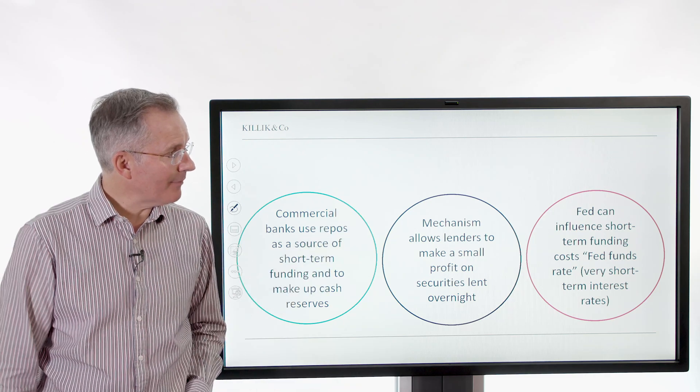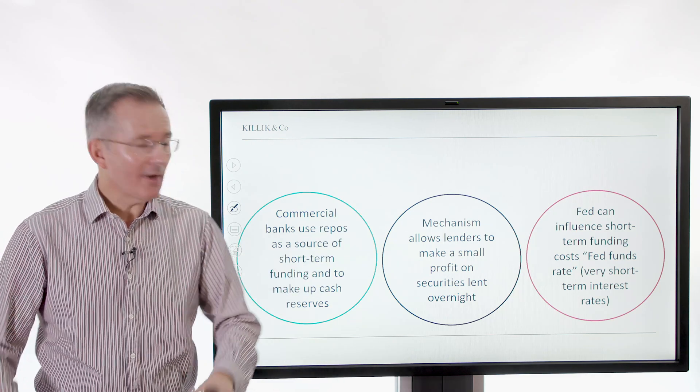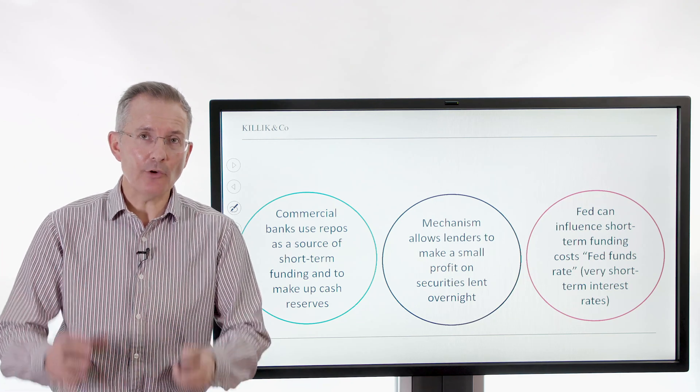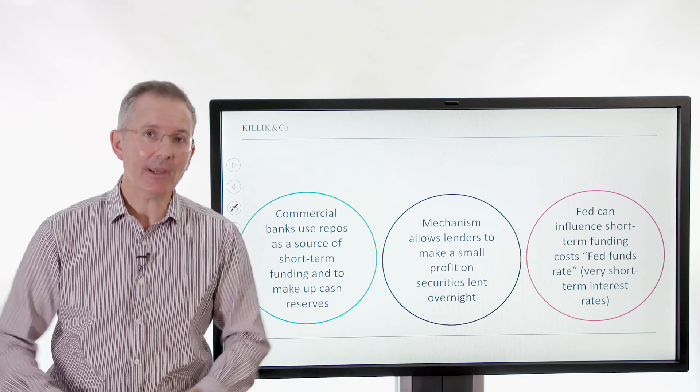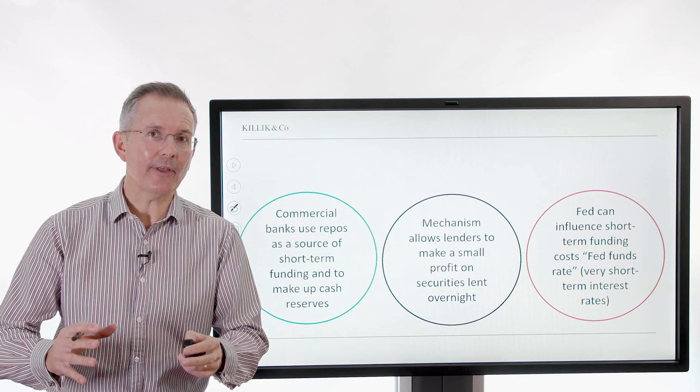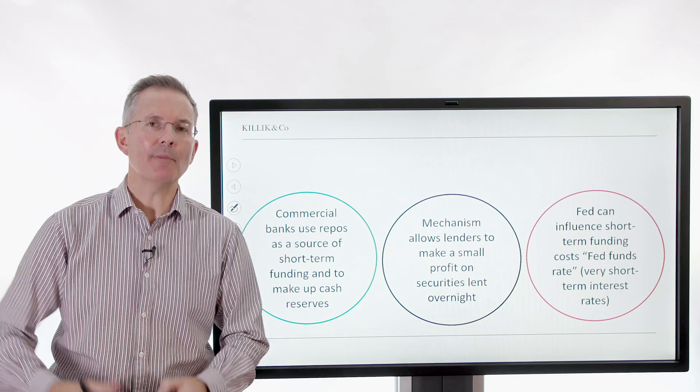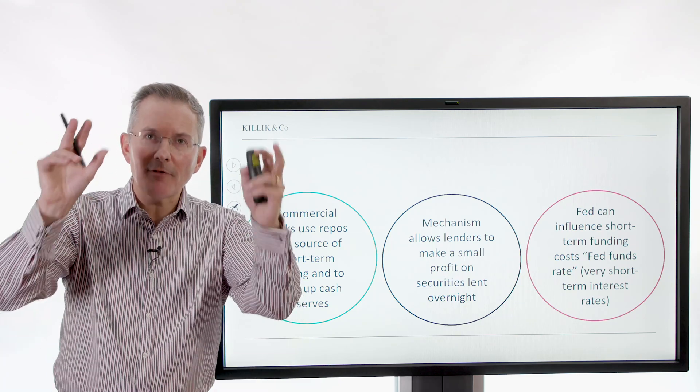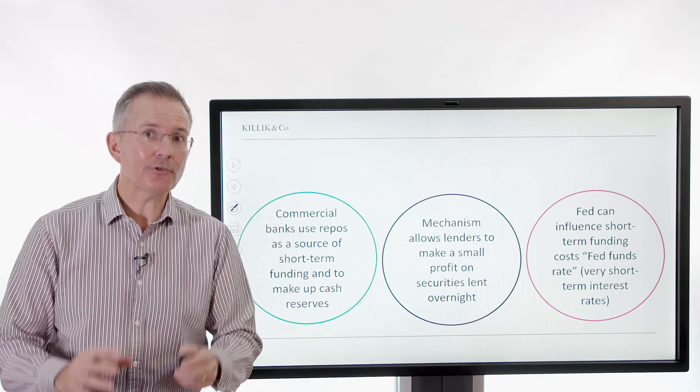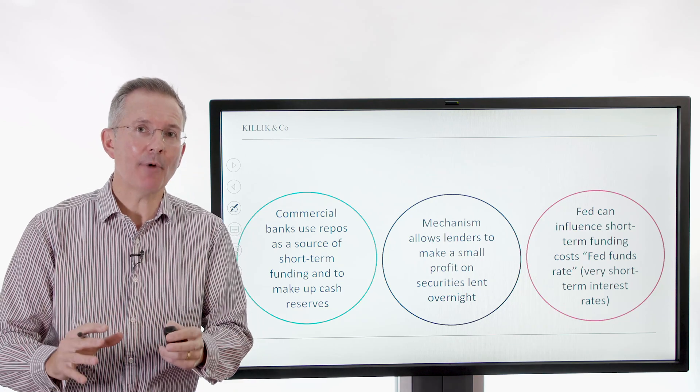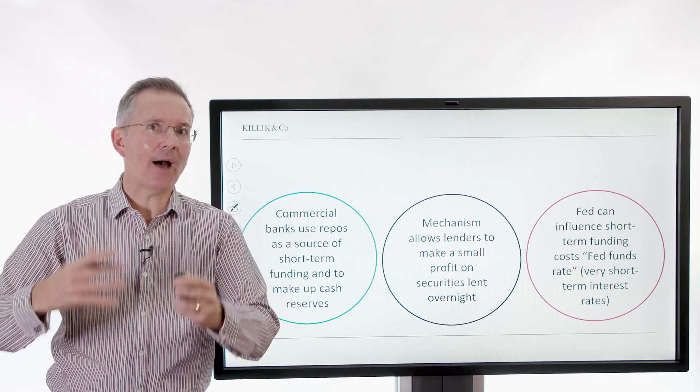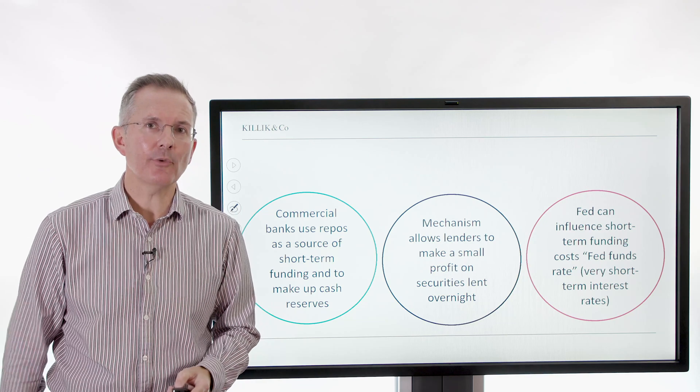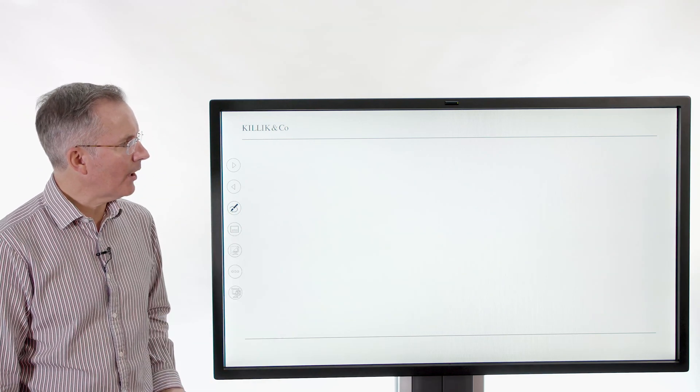And it allows the Fed to influence short-term funding costs, very short-term interest rates. So central banks participate in this market and can have a bearing on the price at which repo transactions take place. The interest rate, and I use my fingers like that because it is an interest rate, but the mechanics of the repo market mean that people don't have to faff around actually quoting accrued interest to each other.